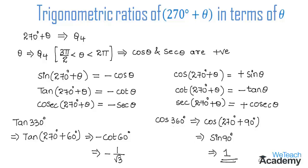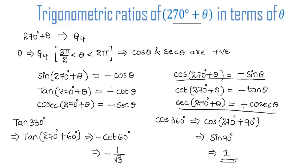In conclusion, 270 degrees plus theta lies in the fourth quadrant, where only cos and secant are positive and all other ratios are negative. Hope you understood the concept. For more videos on trigonometry, visit vteachacademy.com. Thanks for watching, have a nice day.